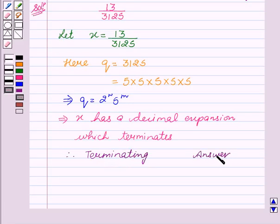Therefore, the given rational number has a terminating decimal expansion. Hope you understood the solution and enjoyed the session. Goodbye and take care.